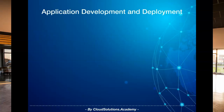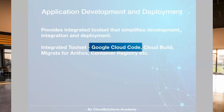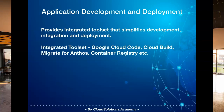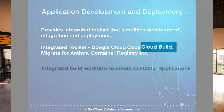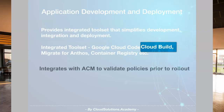The next capability I'd like to talk about is application development and deployment. For developing applications on Anthos, Google Cloud offers various integrated tool sets that simplify the overall development, integration, and deployment. For instance, Google Cloud Code lets you write, run, and debug your cloud-native applications, and also provides a set of predefined templates that help you deploy your application quickly on various environments. When it comes to deployment, tools like Cloud Build let you create a standardized build workflow to generate container images which can be triggered from your source control repository. Cloud Build also integrates with Anthos Config Management at build time to ensure any new deployment artifacts are validated in advance against existing policies.